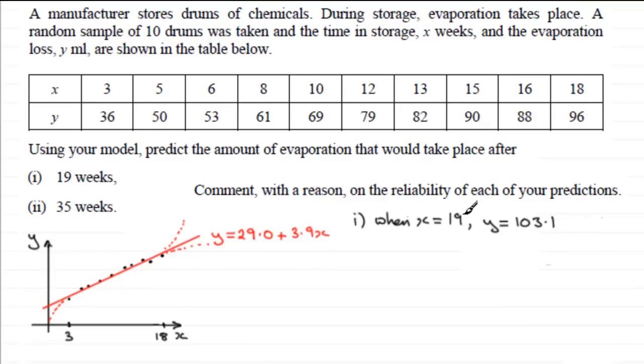Now when x equals 19 however this point is fairly close to 18. So I would have thought then that 19 is close to the highest value of x and so is likely to be reasonably reliable.